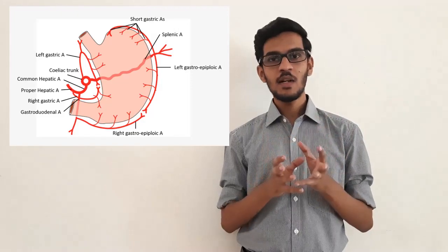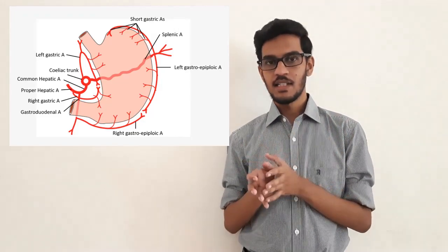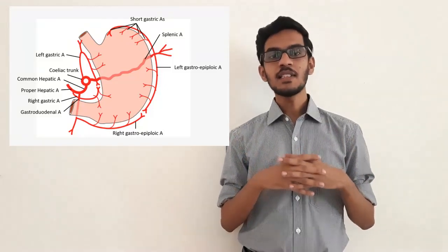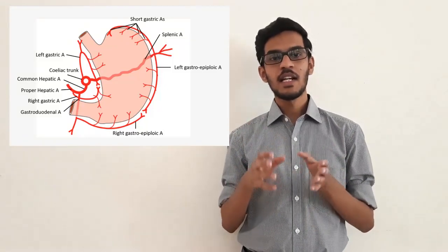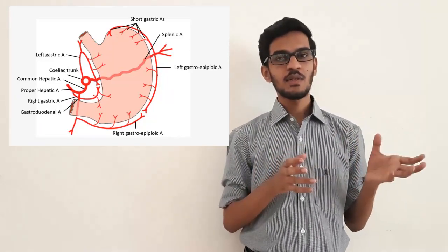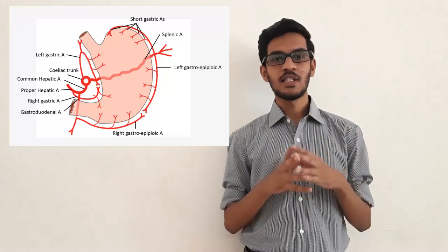Lesser omentum contains left and right gastric arteries. The greater omentum contains left and right gastroepiploic arteries. Gastrosplenic ligament contains six short gastric arteries and left gastroepiploic artery. Posterior gastric arteries also contribute to the arterial supply of stomach. I have attached a chart about the branches of the abdominal aorta so you can get a clear idea about these branches.